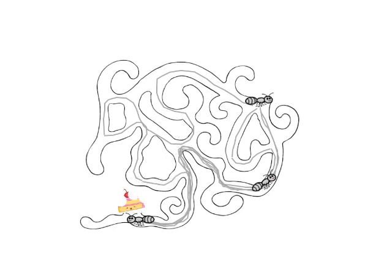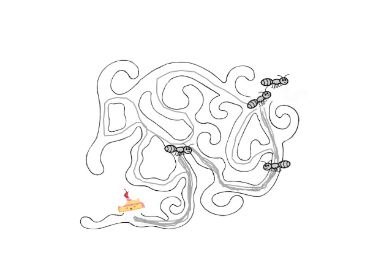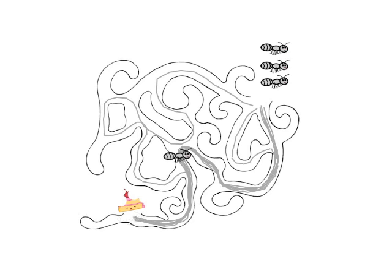As a result, pheromone accumulates faster in the shortest path around the obstacle. And since ants prefer to follow trails with large amounts of pheromone, eventually all the ants converge to the shorter path.